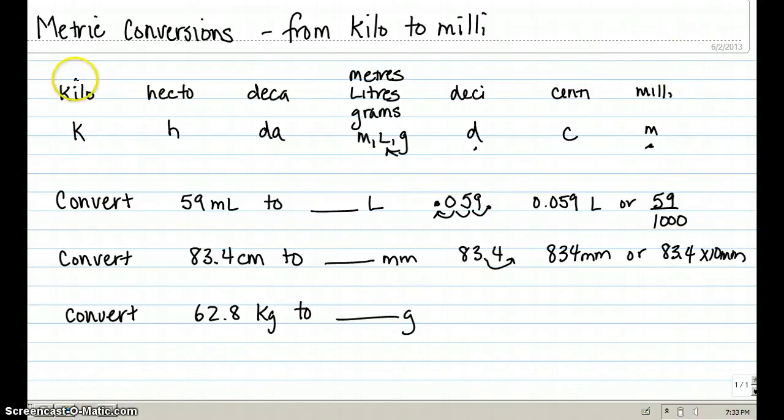So if we start at kilo, we'd move it one, decimal place one, two, three times to get to the base unit of grams. So if I have 62.8 and I move it one, two, three times...